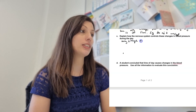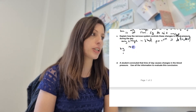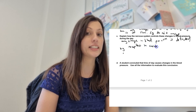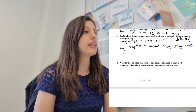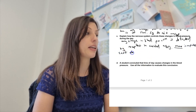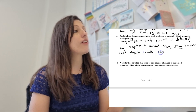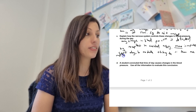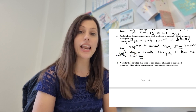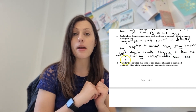Question three: explain how the nervous system controls these changes in blood pressure during the day. Any changes in blood pressure are detected by the pressure receptors in the carotid artery — that would be our first mark. If blood pressure increases, more impulses are sent to the medulla oblongata, and then more impulses are sent from there via the parasympathetic nervous system to the SAN. That will cause the SAN to release waves of depolarization less frequently, reducing heart rate and therefore bringing down the blood pressure.